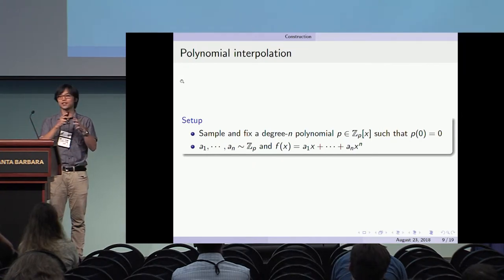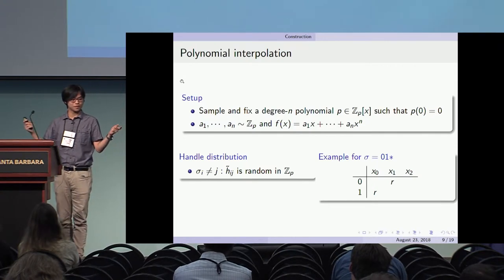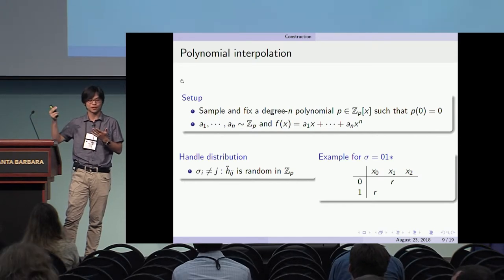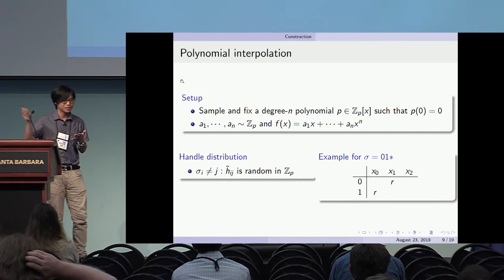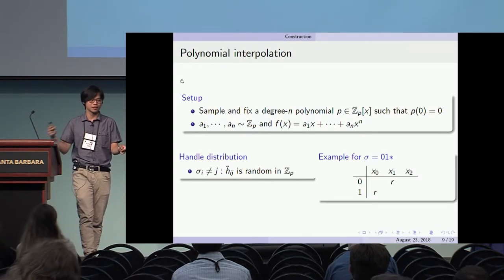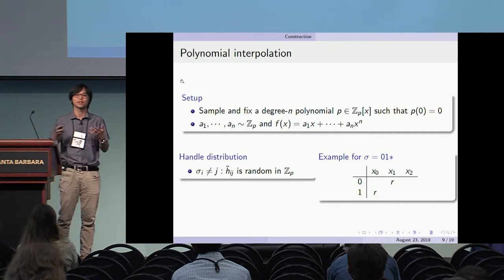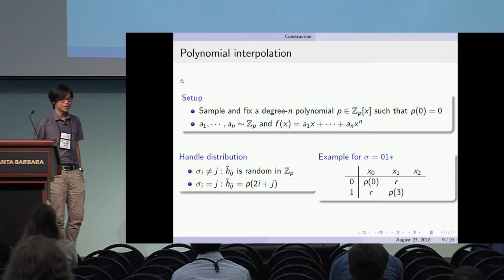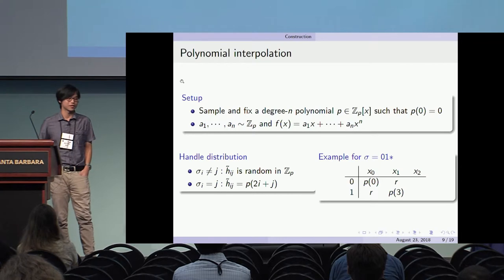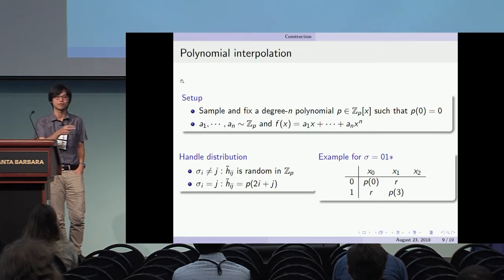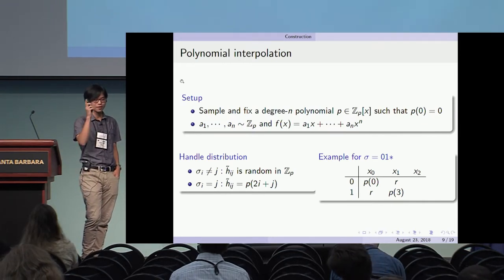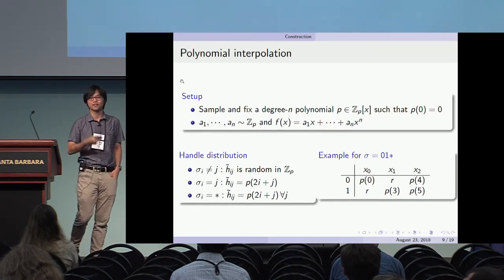We initialize the table of two-n handles as follows. For slots that are not part of an accepting input — for example, in pattern 0, 1, *, if x_0 is 1 — we give a completely random group element mapped to the handle space, where r is an independently sampled random group element. For slots that are part of an accepting input, we give a unique sample from the polynomial, with input index 2i + j. This is done the same way for both the non-wildcard accepting slots and the wildcard slots.